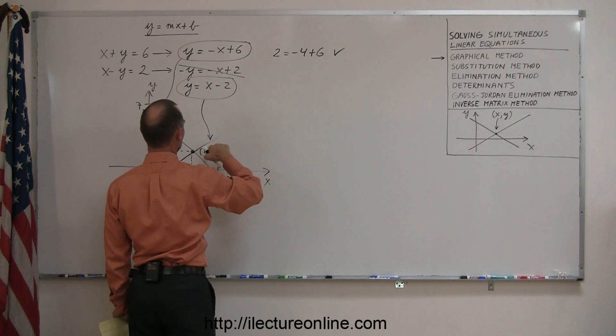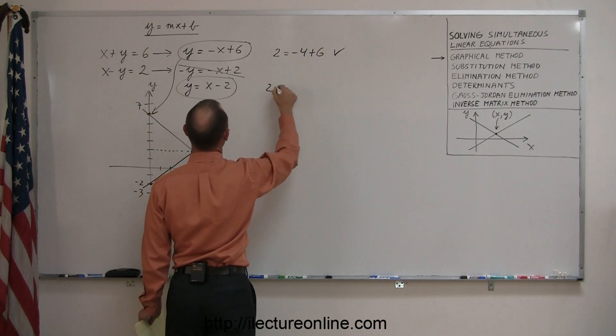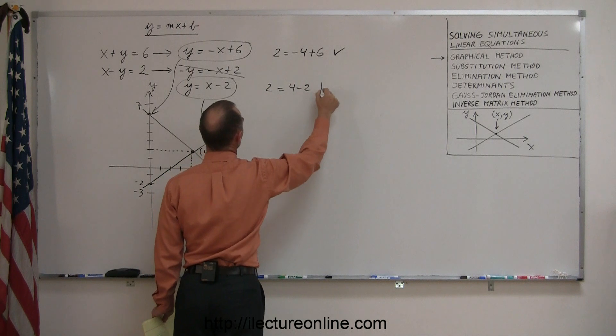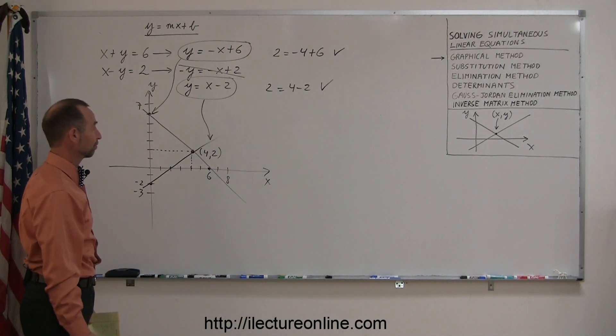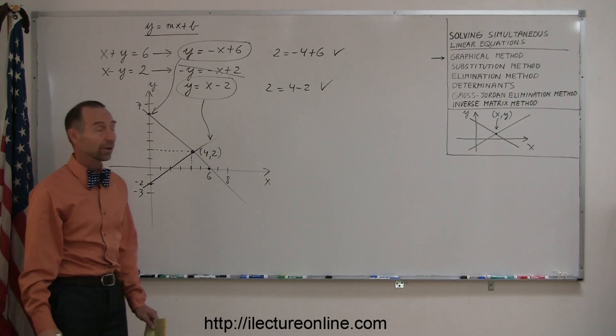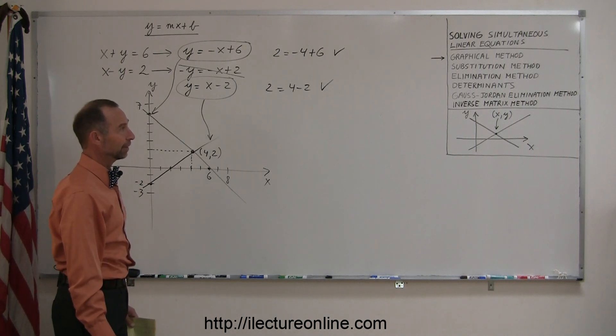If I plug the numbers in here, 4 for x, 2 for y, so I get 2 equals 4 minus 2. That seems to be okay as well, so yes, I did find the correct solution. So that's how you solve for linear equations using the graphical method.